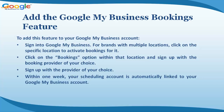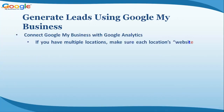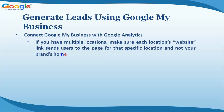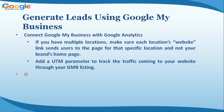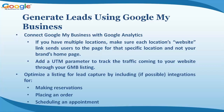Sign up with the provider of your choice, and within one week your scheduling account is automatically linked to your Google My Business account. To generate leads using Google My Business, connect it to Google Analytics. If you have multiple locations, make sure each location's website link sends users to the page for that specific location and not your brand's home page. Add a UTM parameter to track the traffic coming to your website through your GMB listing. Optimize a listing for lead capture by including, if possible, integrations for making reservations, placing an order, and scheduling an appointment.